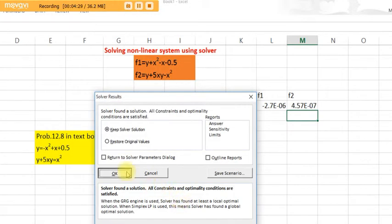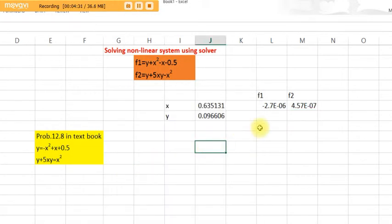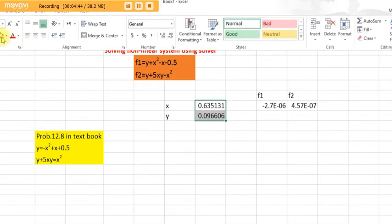See here, f1 and f2 both are going to almost zero, and the x and y values are here.